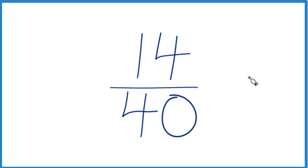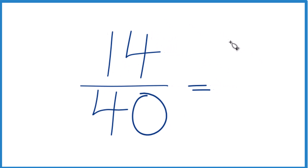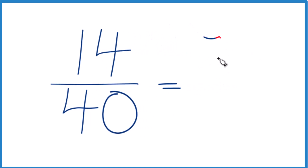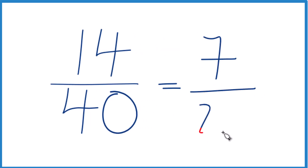Since we have two even numbers — the numerator and the denominator are both even — let's just divide both by 2. That usually works pretty well. 14 divided by 2 would be 7, and 40 divided by 2 would be 20. So 14 fortieths is equal to 7 twentieths.